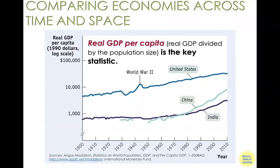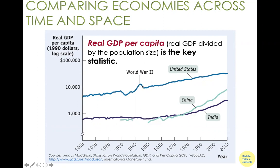Let's first understand what we mean by economic growth and why some countries grow better than others. We have seen the growth for the United States — during the past century there was significant growth. The per capita GDP increased roughly eightfold during the past century. Certainly there were fluctuations, including the Great Depression and World War II.